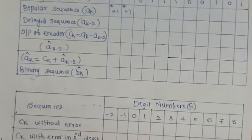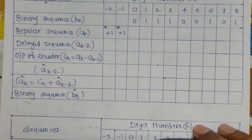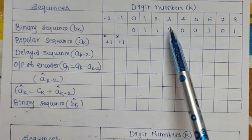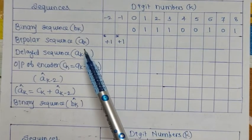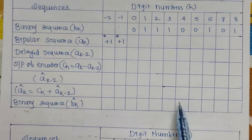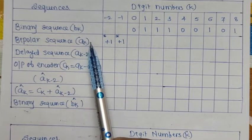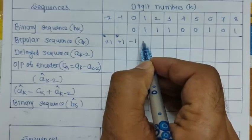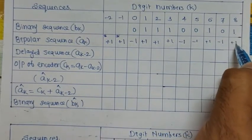A table has been prepared for calculating encoder and decoder output. The input binary sequence bk is: 0, 1, 1, 1, 0, 0, 1, 0, 1. For the bipolar sequence ak, an initial value of plus one is assumed. Applying the level shifter: zero becomes minus one, one becomes plus one. So ak is: +1, +1, -1, -1, +1, -1, -1, +1, +1 (with the initial plus one prepended), corresponding to each bk value.